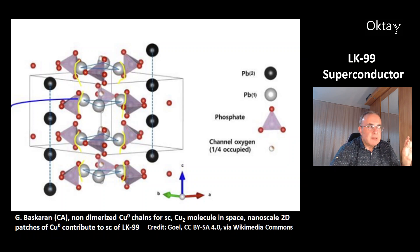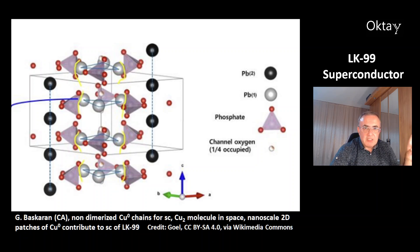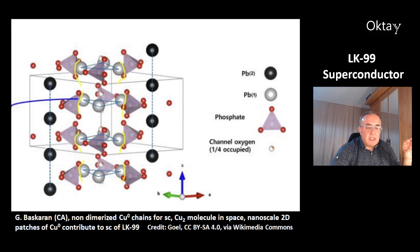There is another work from Baskaran in Canada. According to this scientist, the superconductivity of LK99 is based on non-dimerized copper-zero chains. Copper-zero means copper atoms, not copper ions — the oxidation state is zero. In their paper they refer to copper-two CO2 molecules which were detected in space. According to this work, the superconductivity of LK99 is based on nanoscale 2D patches of these copper-0 atoms that contribute to the superconductivity of LK99.